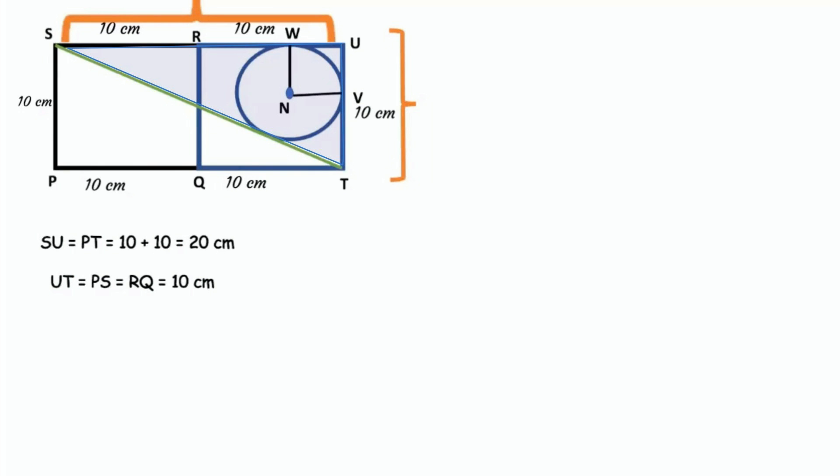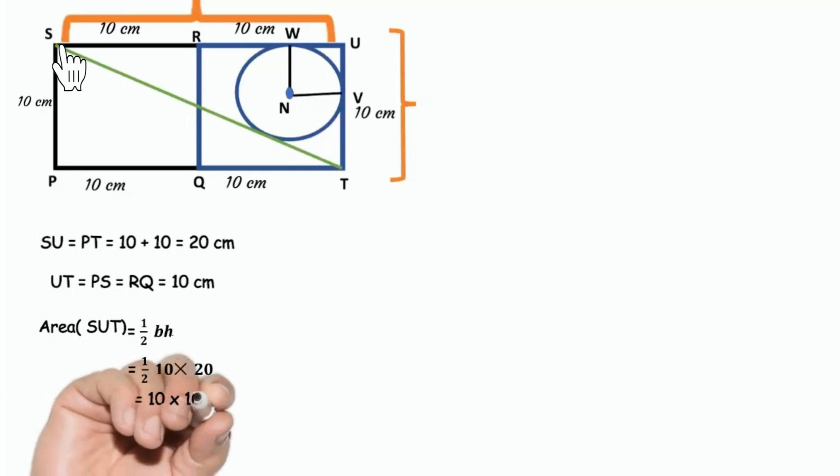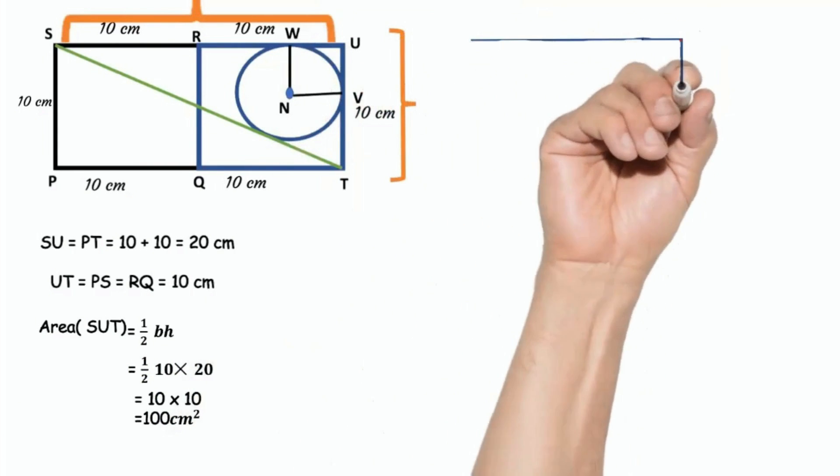Here SUT is a right angled triangle. Hypotenuse is ST. Area of triangle is half into base into height. Area of triangle SUT equals half into 20 equals 10 into 10 equals 100 cm square.